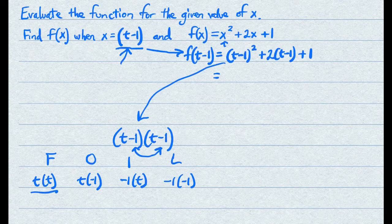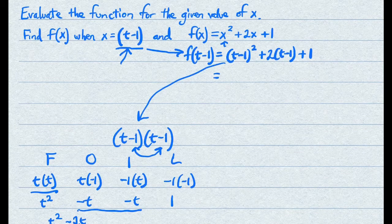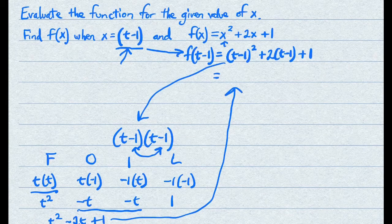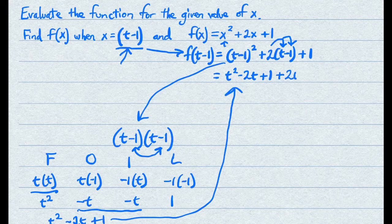When you simplify: t times t is t squared, t times negative 1 is negative t, negative 1 times t is negative t, and negative 1 times negative 1 is 1. Combining the two middle terms gives you t squared minus 2t plus 1. For the second part, distribute the 2 to both terms: 2 times t is 2t, and 2 times negative 1 is negative 2. Then bring down the plus 1.